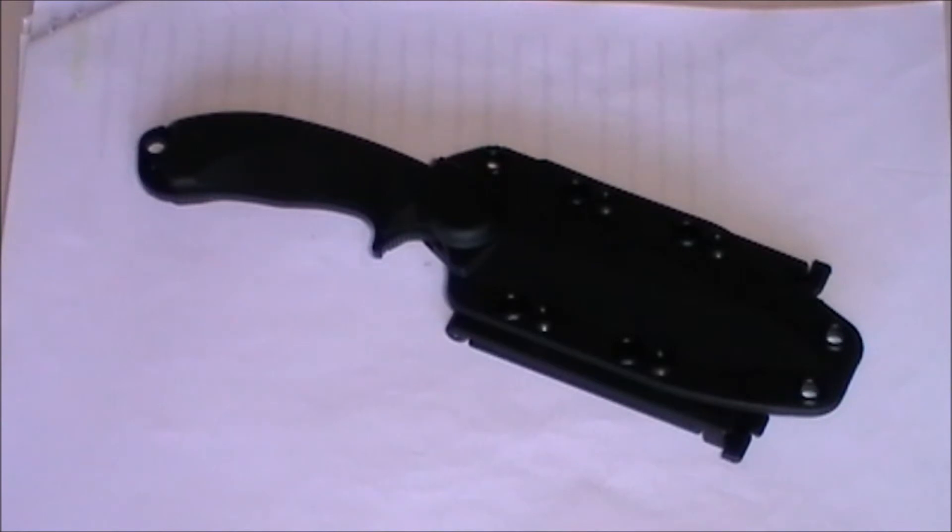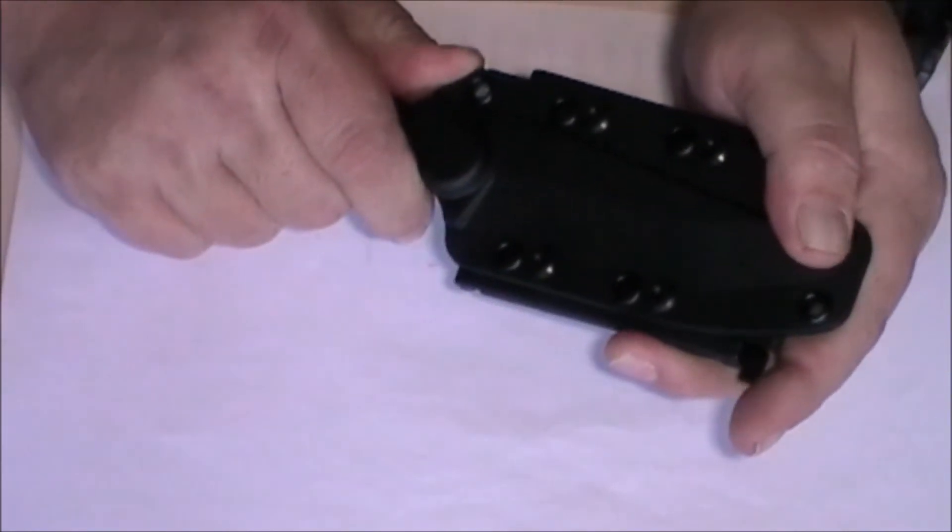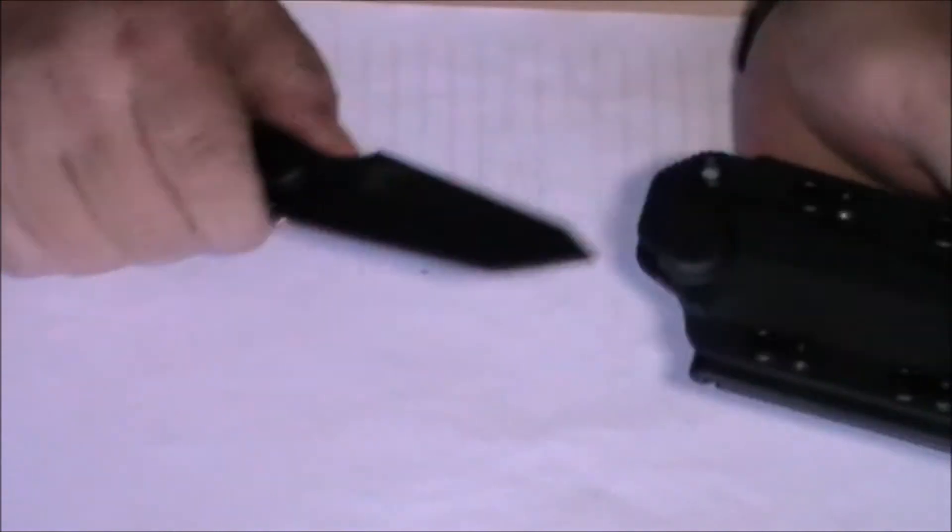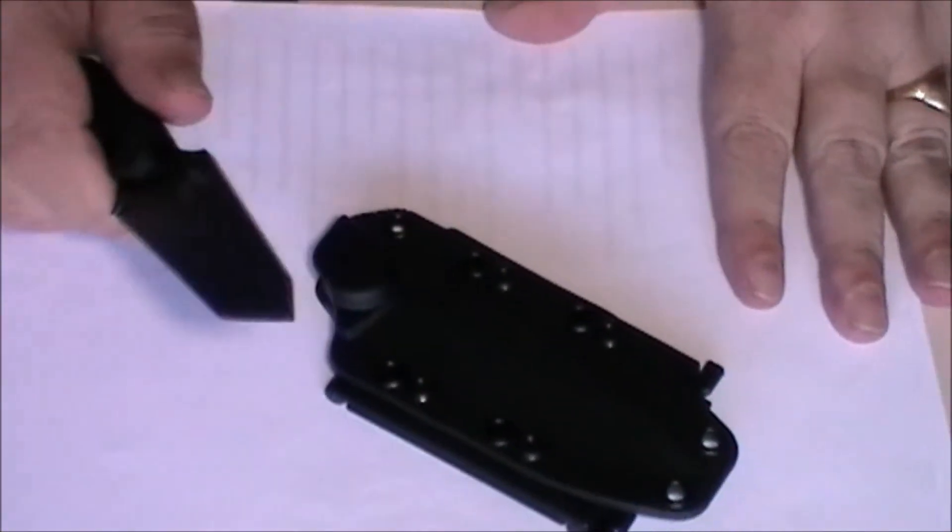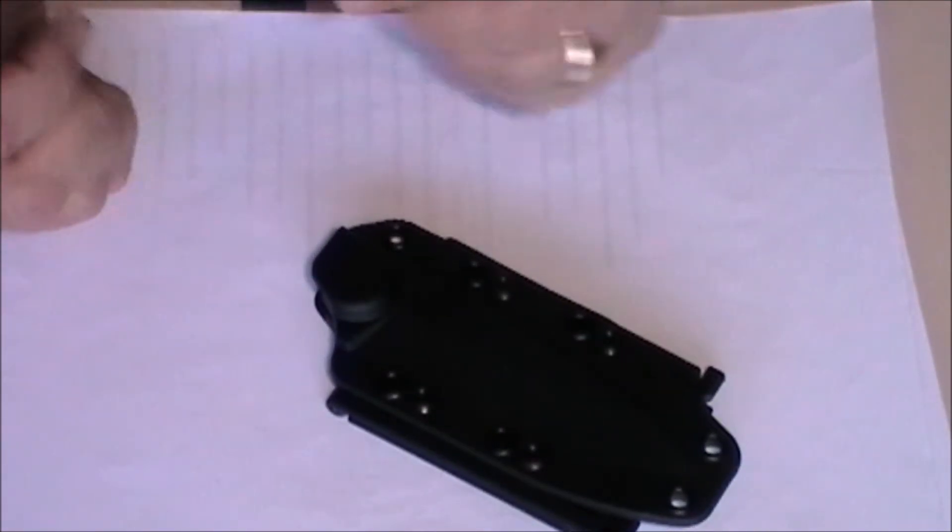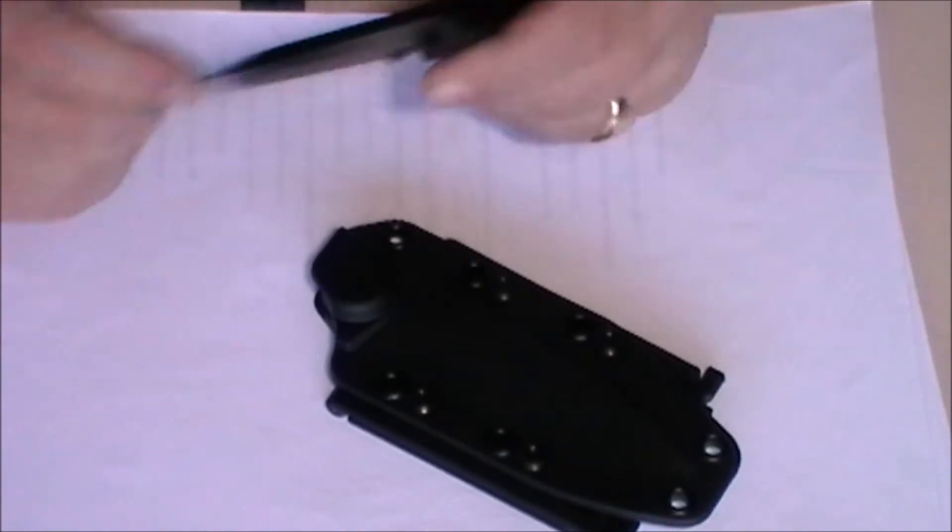This we have here is the Tanto Surge. It's made out of AUS-8 steel, which is a very common steel to have knives made from. It works very well—it's a form of stainless steel.